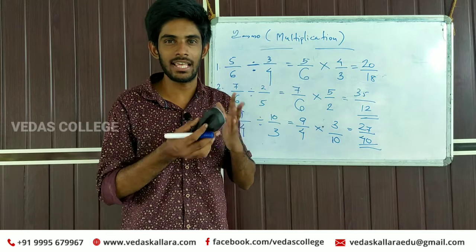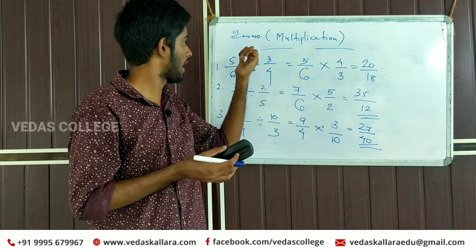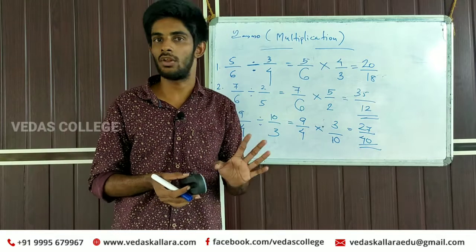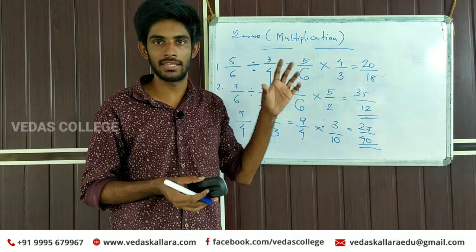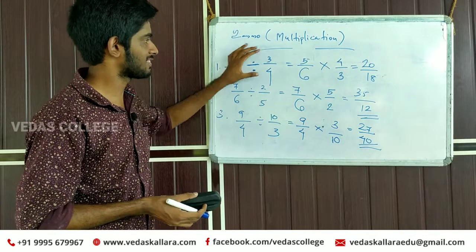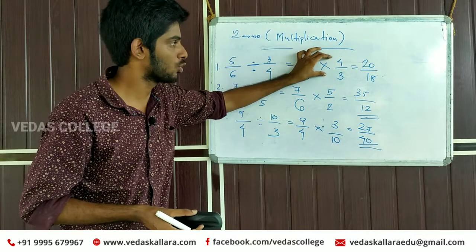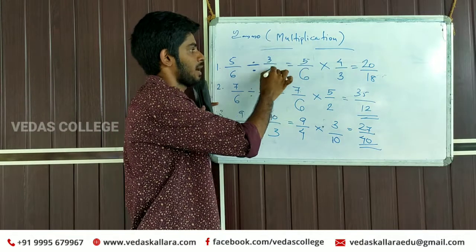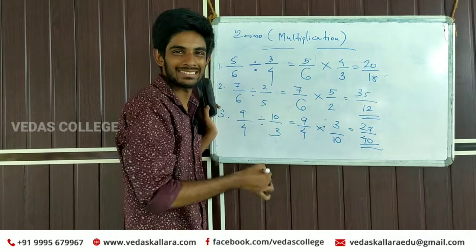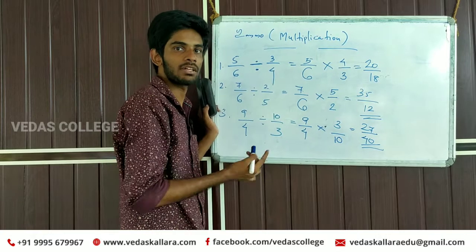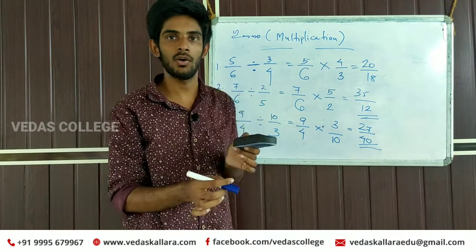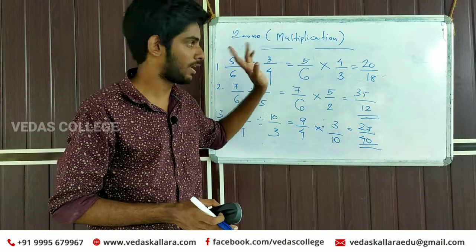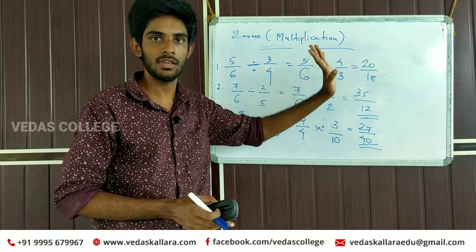This is a fraction of the division. What is the difference between the fractions? 3×4 is 50, 4×3 is 50, 5×4 is 20, 6×3 is 80.